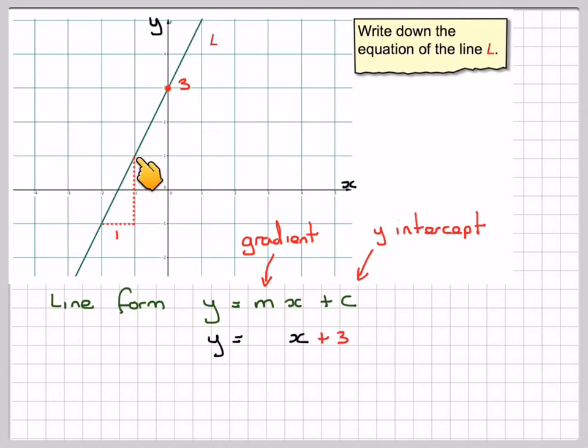The gradient is this distance divided by this distance. So we'll call the gradient m, so it's going to be 2, this distance, divided by 1, which is going to be equal to 2.